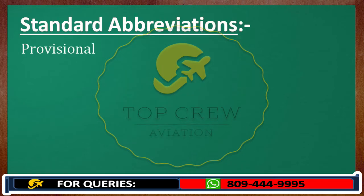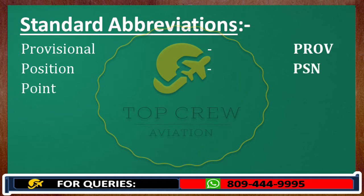Provisional: PROV. Position: PSN. Point: PT. Private: PVT.